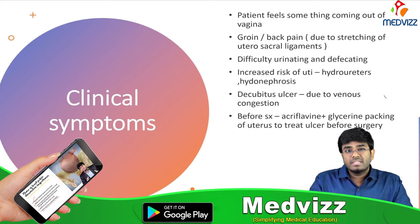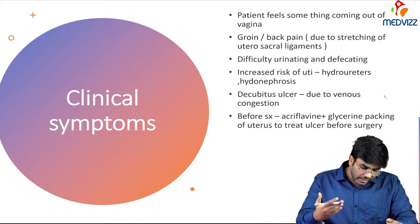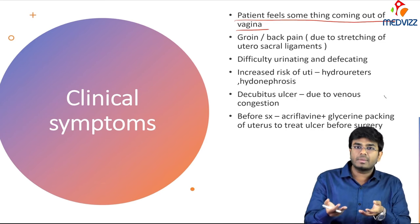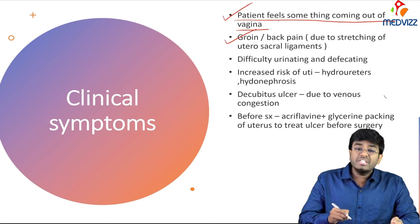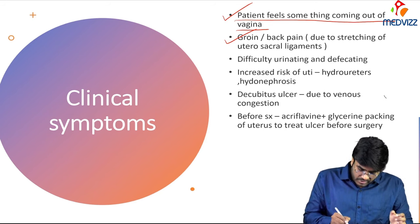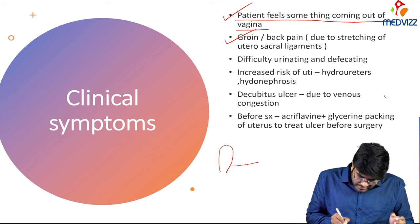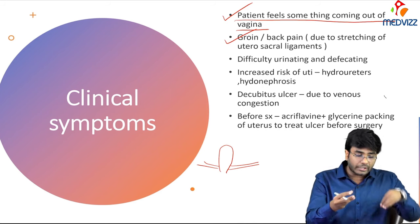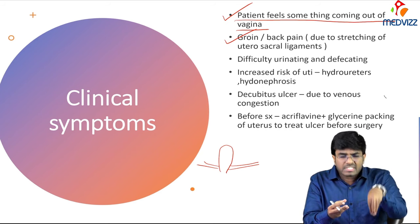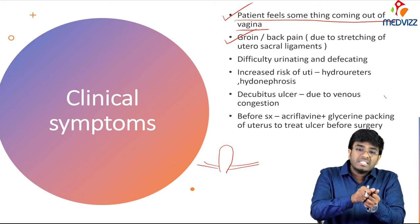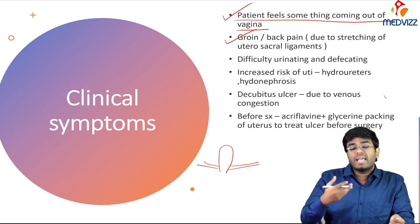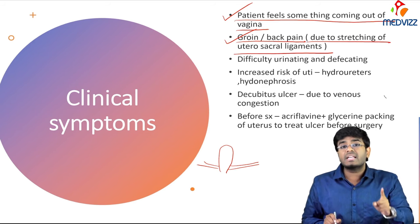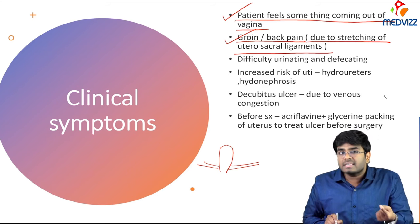Clinical symptoms: the patient feels something coming out of the vagina. She has back pain or groin pain due to stretching of the uterosacral ligaments — when the uterus prolapses down, the supporting ligaments are stretched, causing pain. The uterosacral ligament is the one that prevents retroversion of the uterus.